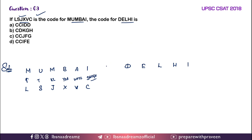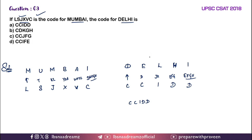Similarly you have to write the code for DELHI. After C, D will come. C, D, E — J, K, L — so I will come here. E, F, G — D will come here. Four letters should be there: E, F, G, H — so D will come here. The code we have got is C, C, I, D, D — Option A is the right answer.